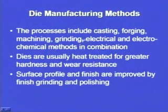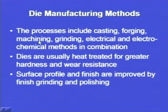These are the different die manufacturing methods: the processes include casting, forging, machining, grinding, and electrical and electrochemical methods in combination. Different combinations of all these methods may be used. If we want to make a gear using a casting process, the quality standards are the most important parameters. Depending upon the quality of the die we want to produce, we have to make a judicious selection of the manufacturing method.